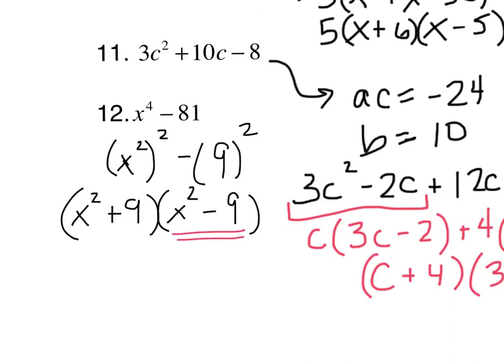But hold on before you decide you're finished. That's another difference of squares. So you can keep going. X squared plus 9 is a sum of squares. You can never factor a sum of squares, ever, ever. It's not possible with real numbers. You'll do it in Algebra 2 when you learn about complex or imaginary numbers. Factors of X squared minus 9? Well, it's a difference of squares. So X plus 3, X minus 3. And that one is finished. It just has three factors instead of two.